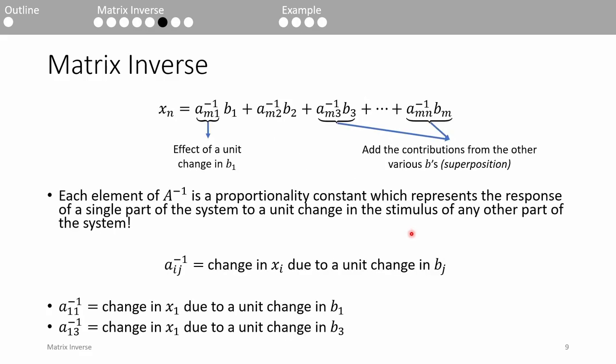The implications of this are tremendous. Because each response variable is a linear combination of each forcing function, the individual elements of the A inverse matrix are actually proportionality constants which represent the response due to a unit stimulus.